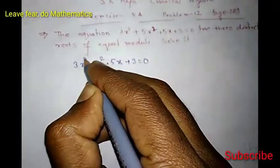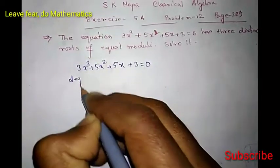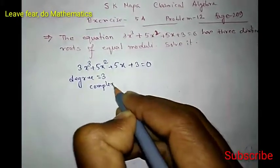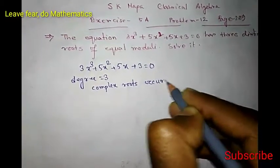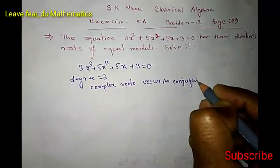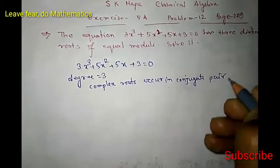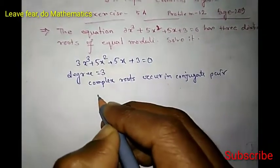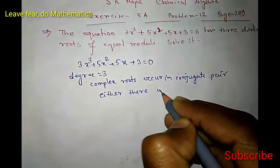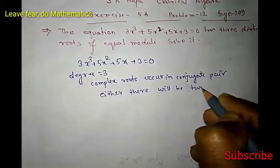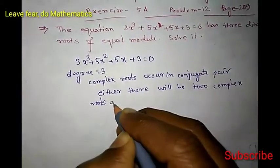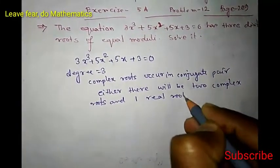This is an equation of degree 3. We know complex roots occur in conjugate pairs. So there will be two complex roots and one real root.